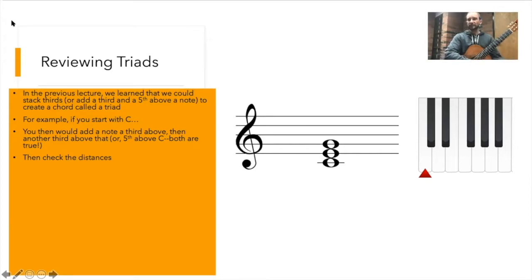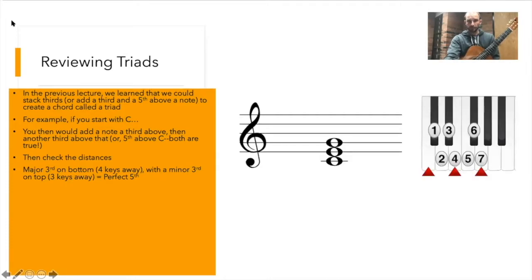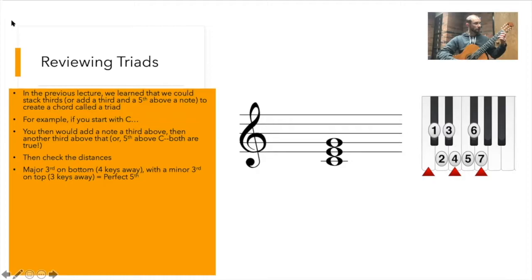We could then check the distances not just with our ear, but also by physically mapping it out on the piano. A major third — the bottom two notes — is defined by being four keys away, the second note being four keys from the first. So we had C, and on the guitar you go one, two, three, four frets. Each fret is the equivalent of a key. And we saw that we had E, so we had a major third for the bottom two notes.